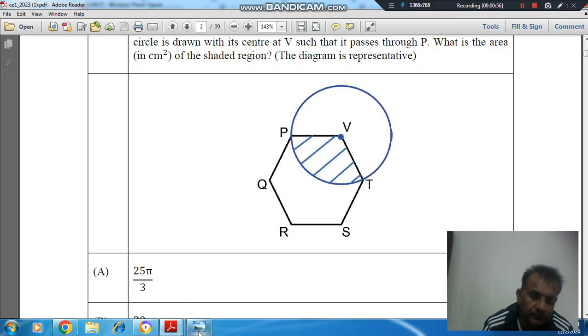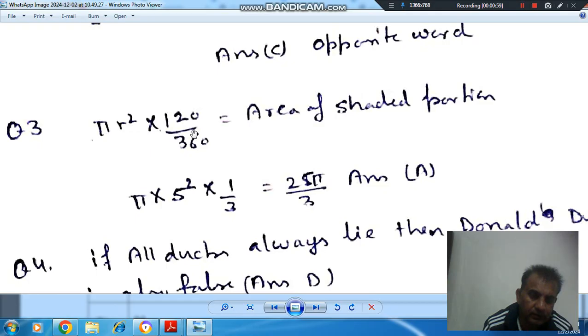So area is πR² × 120/360. R is 5, and πR² is the area of full circle. 120 is the angle, so 120/360, that is 25π/3. The answer is option A.